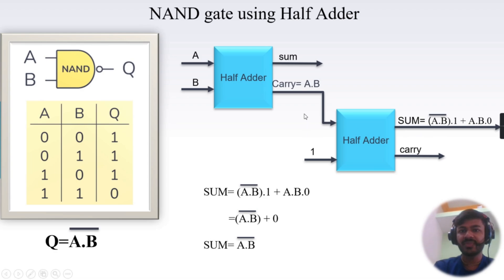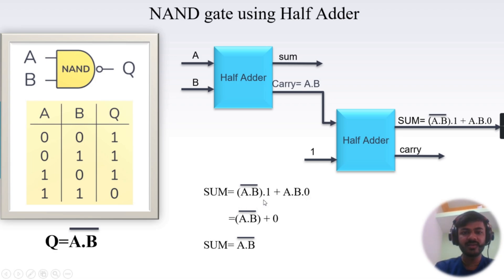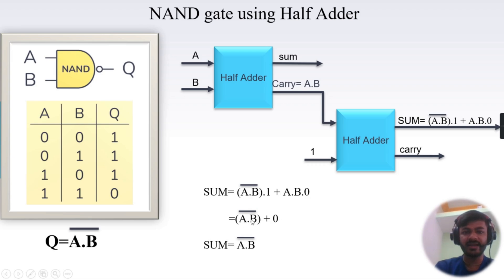For the second half adder, the outputs are sum and carry, and we use the sum expression to get our final output. The sum equals (A AND B)' AND 1, OR (A AND B) AND 0. As per the identity law, (A AND B)' AND 1 = (A AND B)'; and as per the annulment law, (A AND B) AND 0 = 0. So by the identity law, (A AND B)' OR 0 = (A AND B)'. We got the final output A AND B bar — this is how we implemented NAND gate using two half adders.